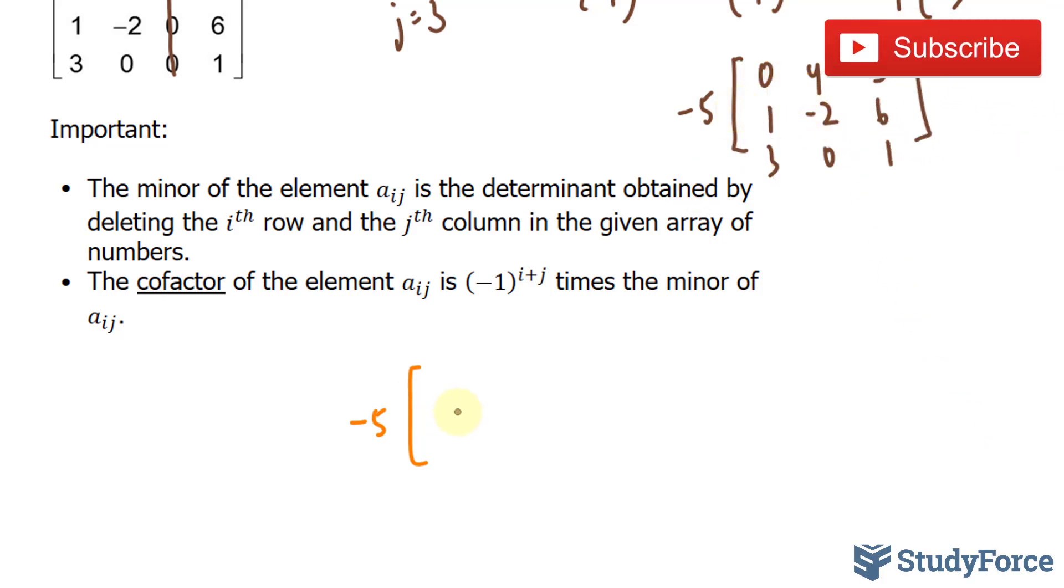What about 1? We have 1 times, this is positive, this is negative, and this is positive. So 1 times negative 1. And since we're in the second row, we'll multiply this by 4, negative 3, 0, and 1.